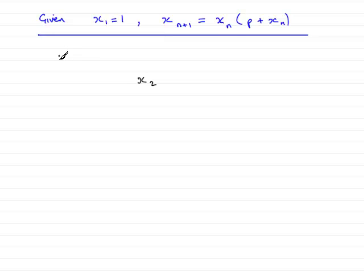Because when n equals 1, we have x2, the second term in the sequence. So when n is 1, x2 equals x1 multiplied by (p + x1).